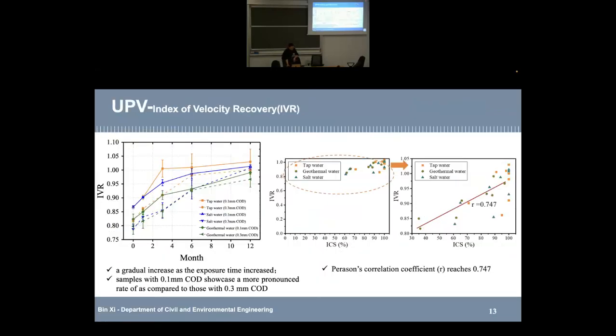Similarly, we found for wide crack, after one month, specimens in tap water can achieve 100%. But in geothermal water, it has the slowest SES than other specimens. And we did the UPV test. Similarly, this result is in good agreement with the result from the SES. You can see for narrow cracks, it has higher IVR. For specimens with wide cracks, it has lower IVR in the same period. But we want to check two kinds of evaluation indicators' correlation relationship. And in this case, we use Pearson correlation coefficient. And you can see this is ICS, this is IVR. And this correlation can achieve 0.747, quite high.